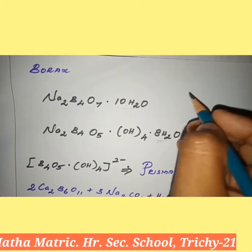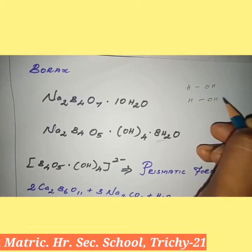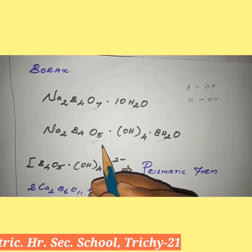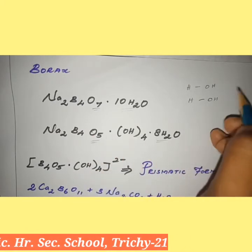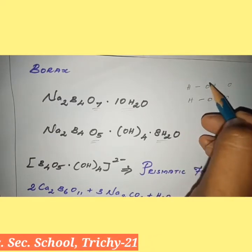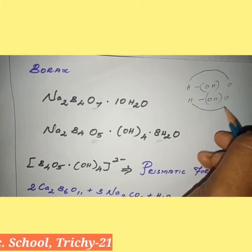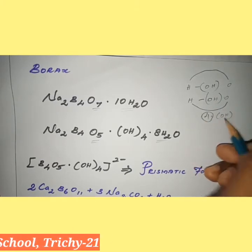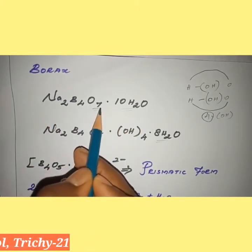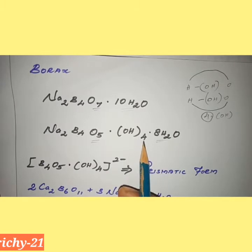In those 2 water molecules, we write H-OH and H-OH. So, here 7 times of oxygen is present, and in the other form oxygen is 5 times. The difference is 2 times of oxygen. So I write one oxygen atom and another one oxygen atom. Now we count the overall hydroxyl groups: 1, 2, 3, 4 times of OH is present. So totally 4 times of OH. Now Na is 2 times, B is 4 times, oxygen is 5 plus 8 plus 4 = 17 total.